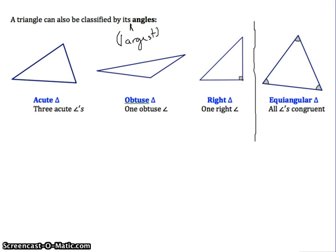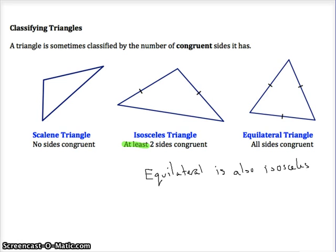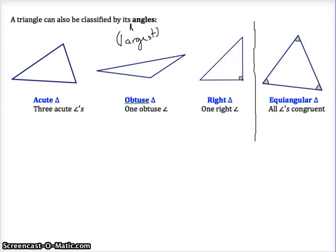So back to this last idea. All triangles have a name kind of in both these categories. They have a name about their sides and they have a name about their angles. So they might say something like draw an acute scalene triangle or draw an obtuse isosceles triangle. And so you have to combine the two ideas sometimes in one triangle.